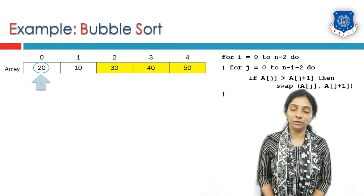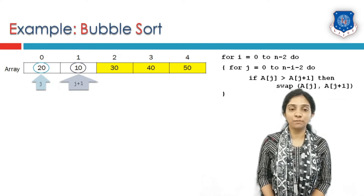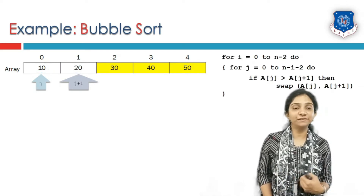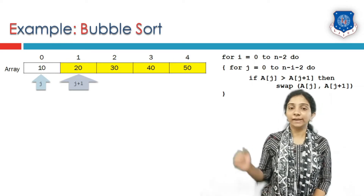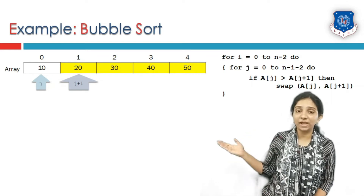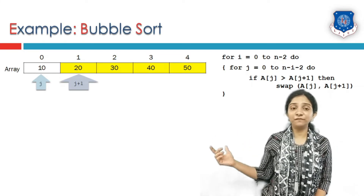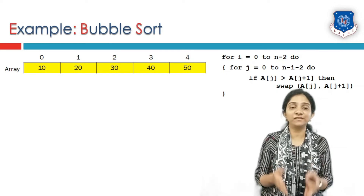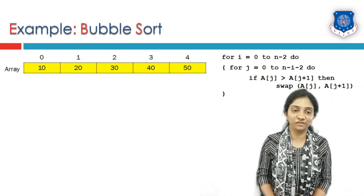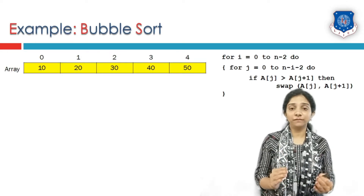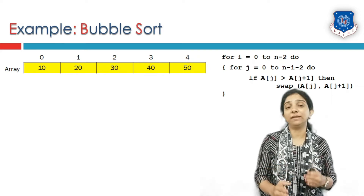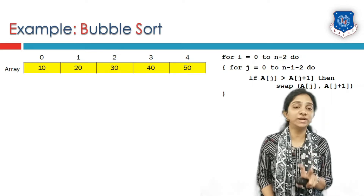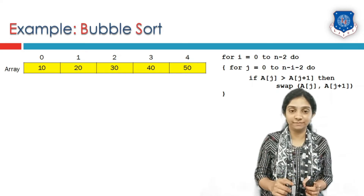Again start j from index 0. J+1 index is index 1. Is 20 greater than 10? Condition is true, so we swap these two elements and j+1 location is already sorted. At this moment n minus 1 elements are sorted — out of 5, 4 elements are sorted. The only remaining single element is sorted by itself. So for n elements, we have n minus 1 passes, and in each pass we compare two adjacent elements; if the larger element comes before the smaller, we swap them.